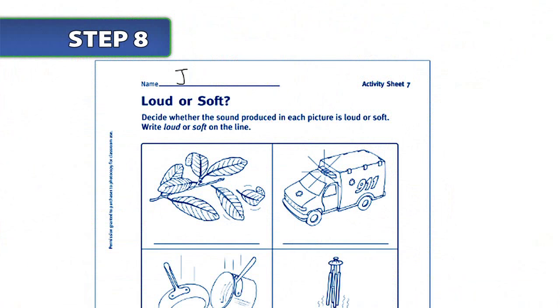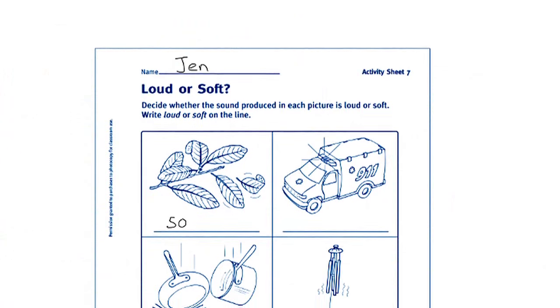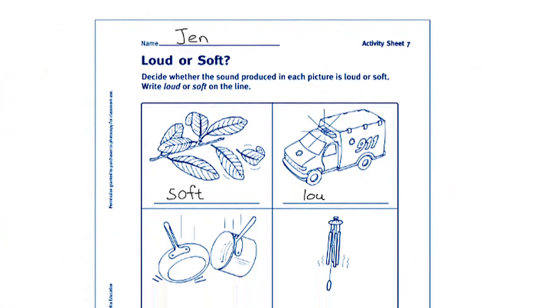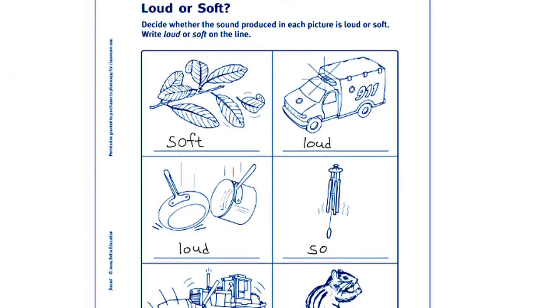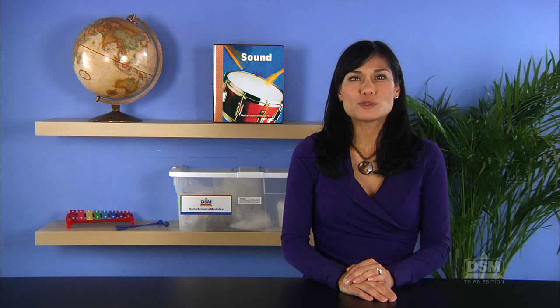Distribute activity sheet 7. Direct students to identify the sound produced in each picture and decide whether it is loud or soft. Discuss how the sound is produced and whether the force required to produce it is strong or weak.